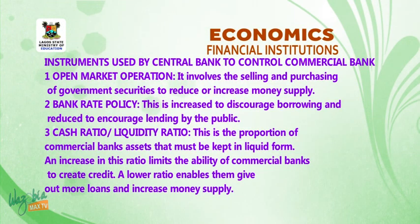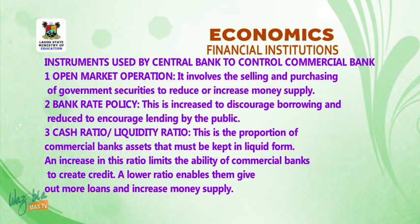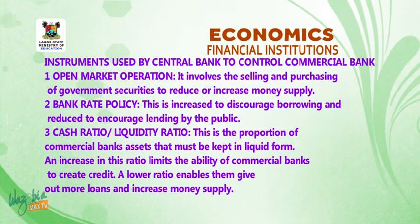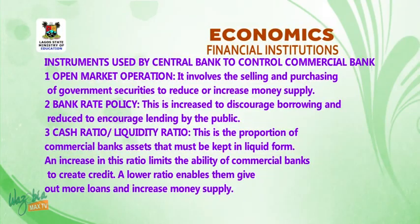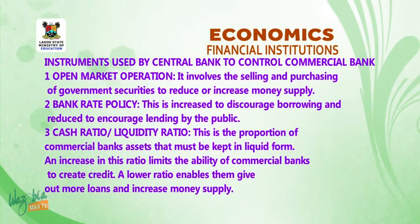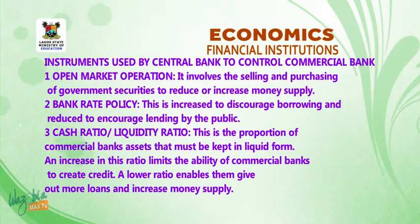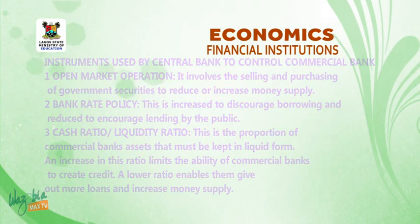2. Bank rate policy — this is increased to discourage borrowing and reduced to encourage lending by the public. 3. Cash ratio or liquidity ratio — this is the proportion of commercial banks' assets that must be kept in liquid form. An increase in this ratio limits the ability of commercial banks to create credit, while a lower ratio enables them to give out more loans and increase money supply.